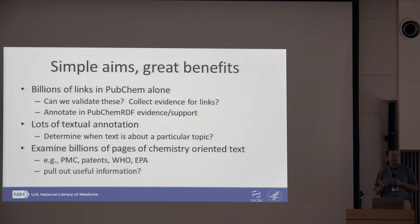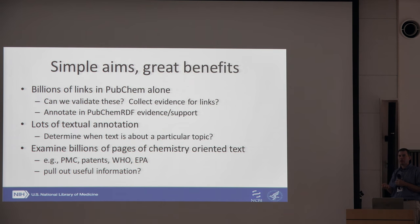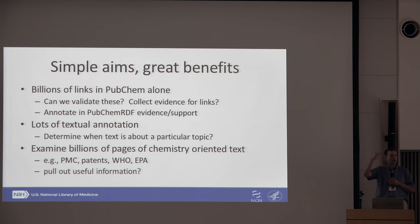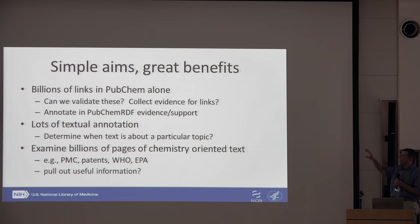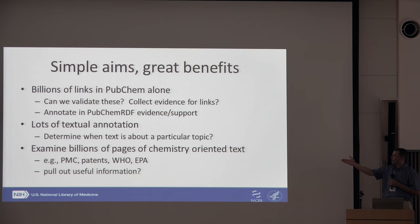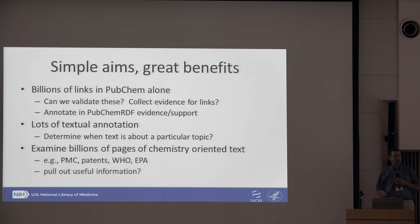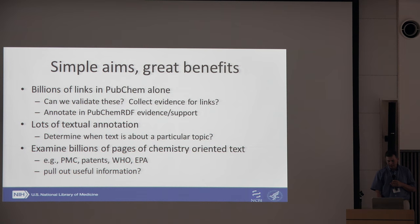In certain cases, by looking at the named entity — the original mention of that chemical — we can also change the preferred form of that chemical structure in the representation for that molecule. When people provide us links, they smear it across multiple chemical structure representations of something that's nearly the same, and we can then go back and normalize that. We can also start to examine the billions of pages of chemistry-oriented text available in PMC, patents, and very large documents from WHO, EPA, and others to pull out the useful content from those types of entities.